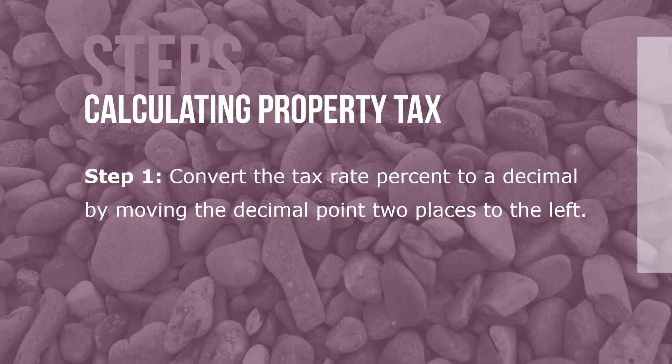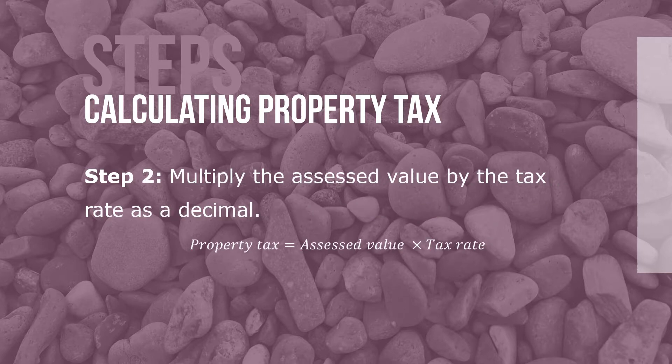Here are the steps to calculating property tax. Step 1: Convert the tax rate percent to a decimal by moving the decimal point two places to the left. Step 2: Multiply the assessed value by the tax rate as a decimal, where property tax equals assessed value times tax rate.